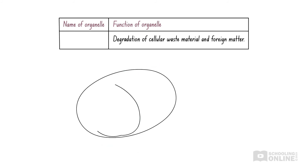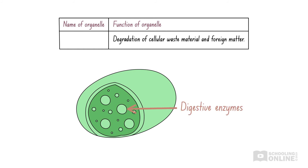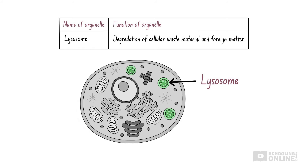Now it's time to identify an organelle that degrades cellular waste material and unwanted foreign matter that enters the cell. Here's a clue: it contains digestive enzymes, which are used to break down complex molecules like proteins into simple molecules like amino acids. The organelle is the lysosome.